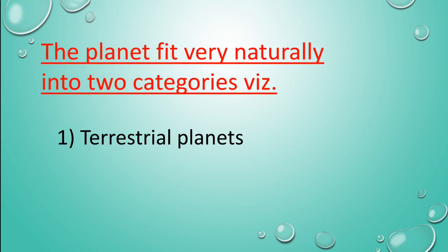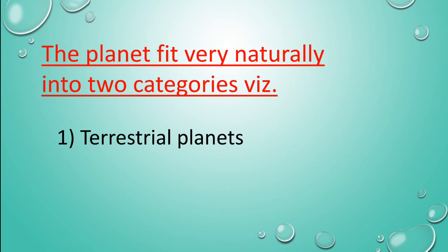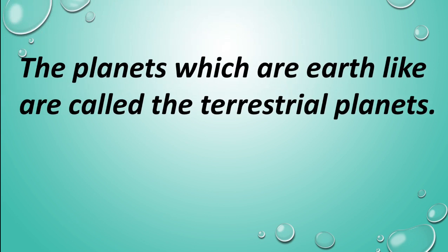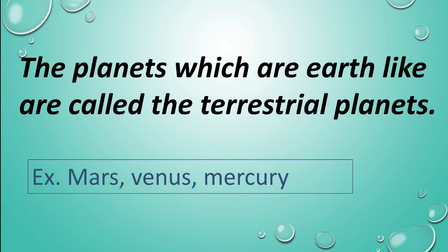The planets fit very naturally into two categories: terrestrial planets and Jovian planets. The planets which are Earth-like are called terrestrial planets.